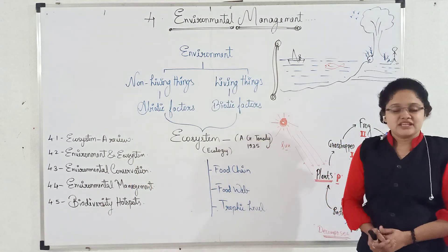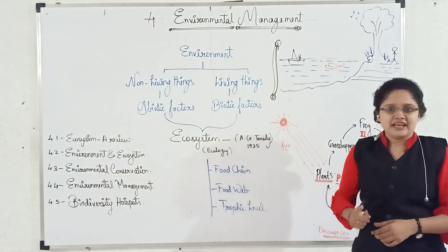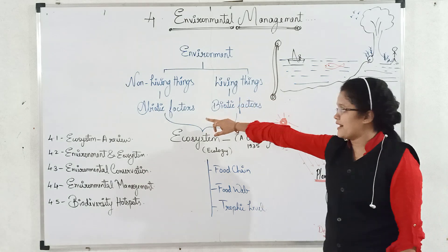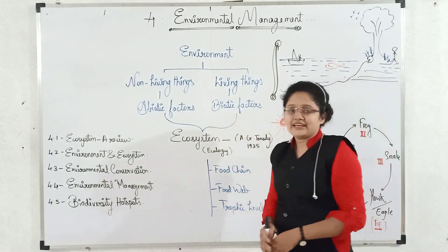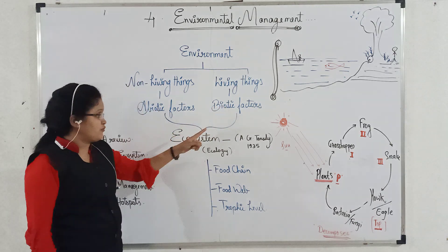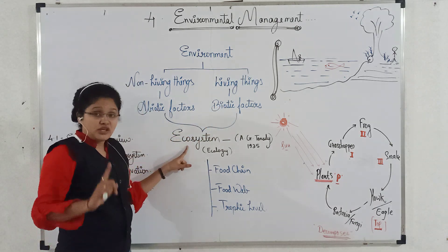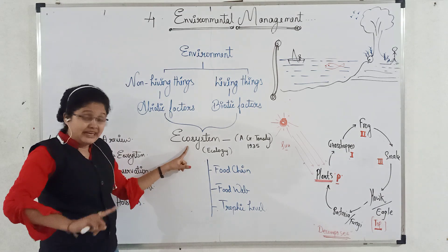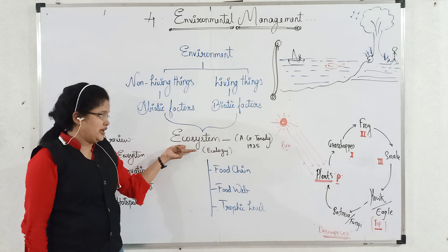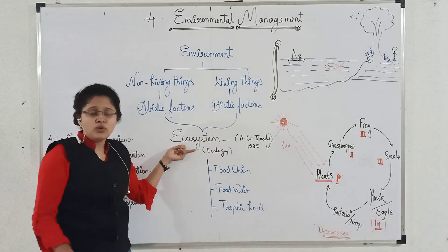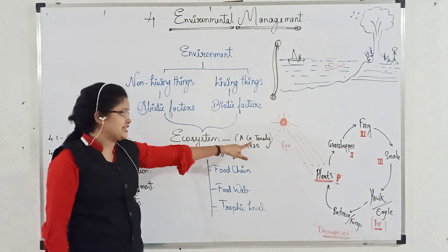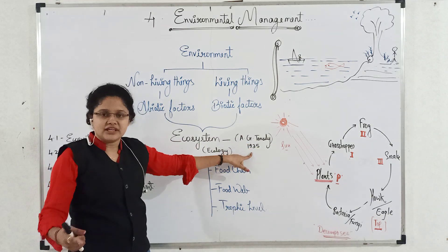Surrounding around us is called as environment. In environment, there are two types of factors: abiotic factors and biotic factors. The interaction between abiotic factors and biotic factors forms an ecosystem. This term 'ecosystem' was coined by A.G. Tansley in 1935.